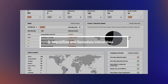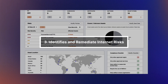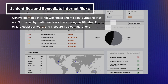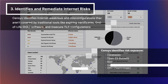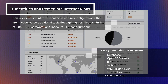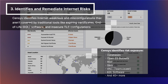Census identifies risks to your organization within the attack surface you have exposed to the internet. This includes but is not limited to databases, ports that are open, and the services running behind them like RDP or SMB. It also identifies end-of-life software and can help you discover unsanctioned cloud assets through our cloud connectors.